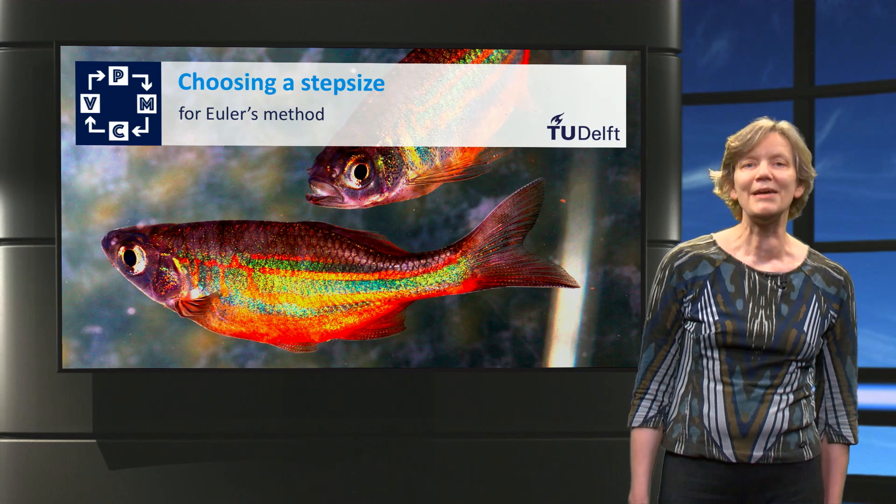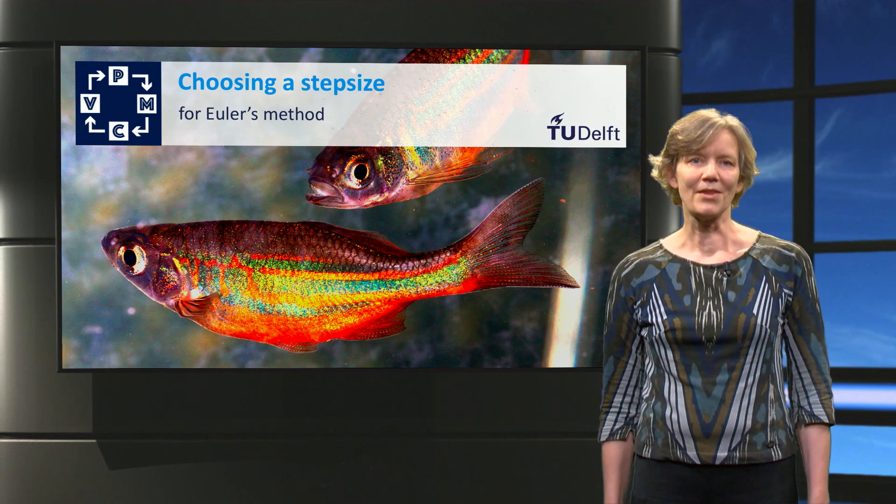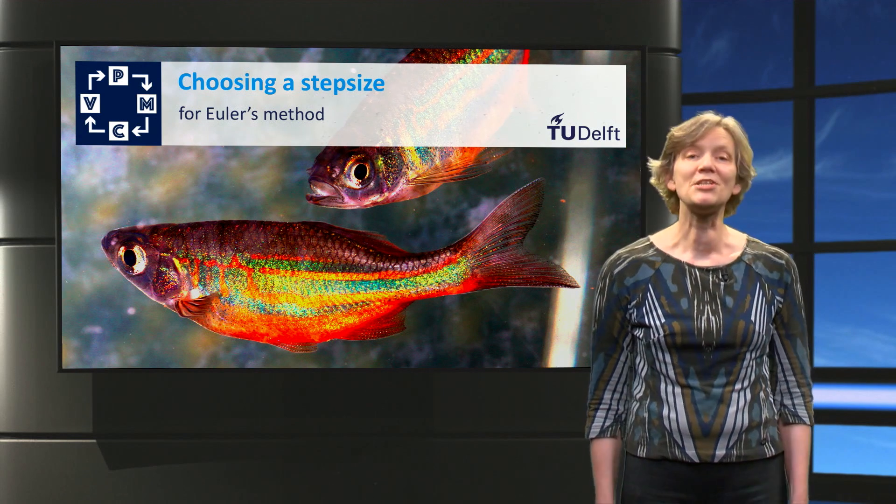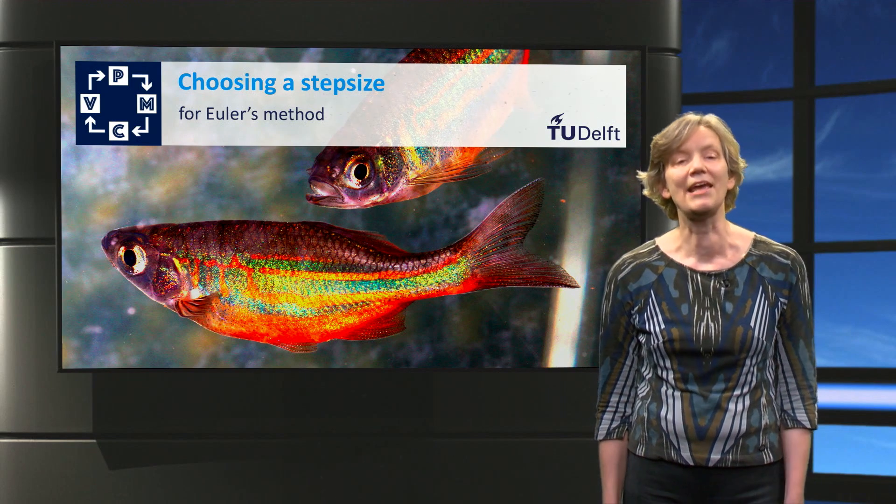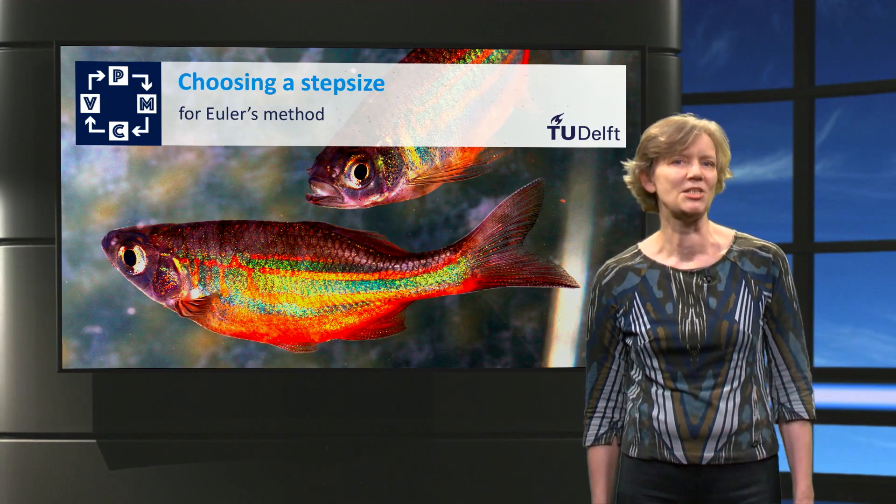We have approximated the solutions of the differential equation for the rainbow fish population with Euler's method. Step sizes that are larger than a day give obviously wrong results. How much smaller than a day is appropriate?